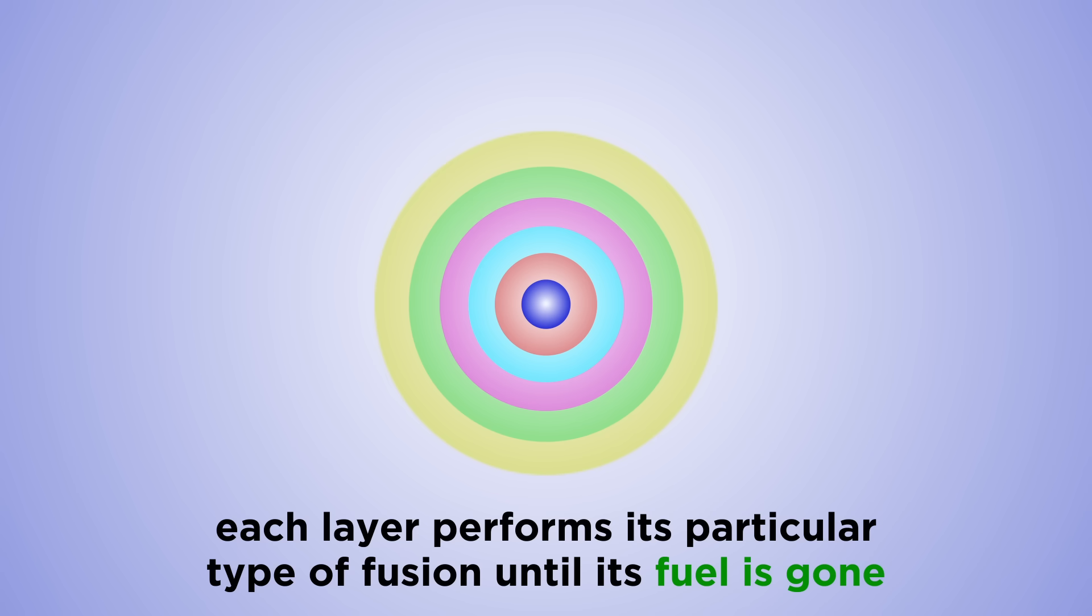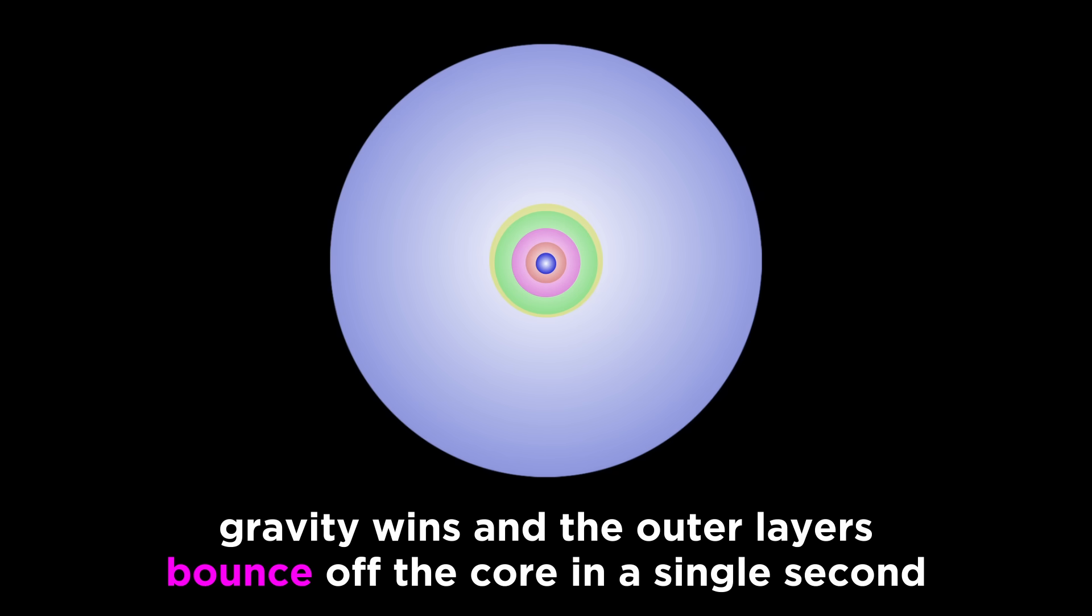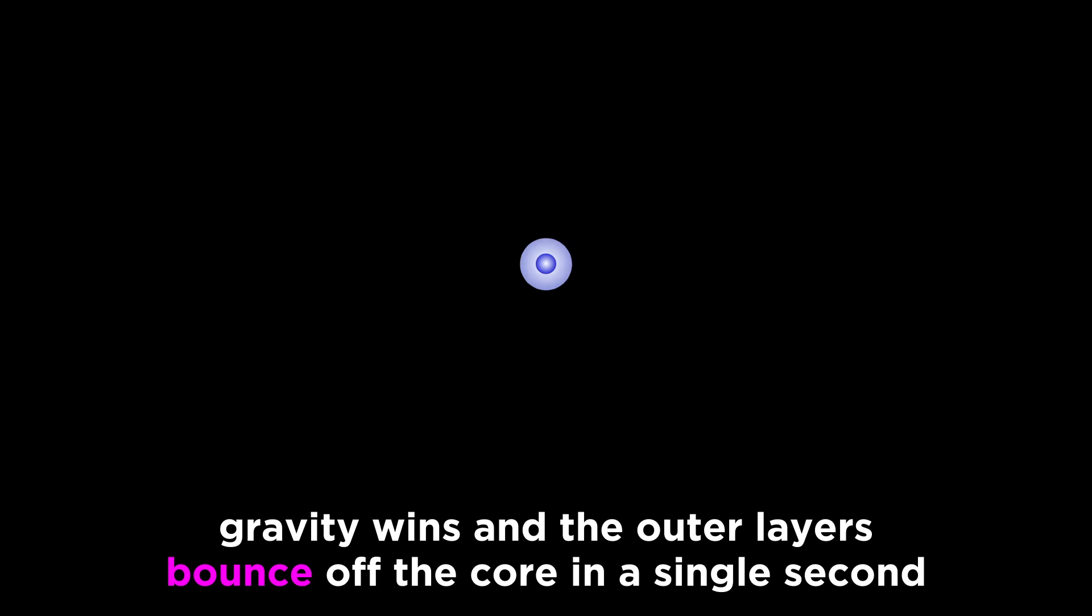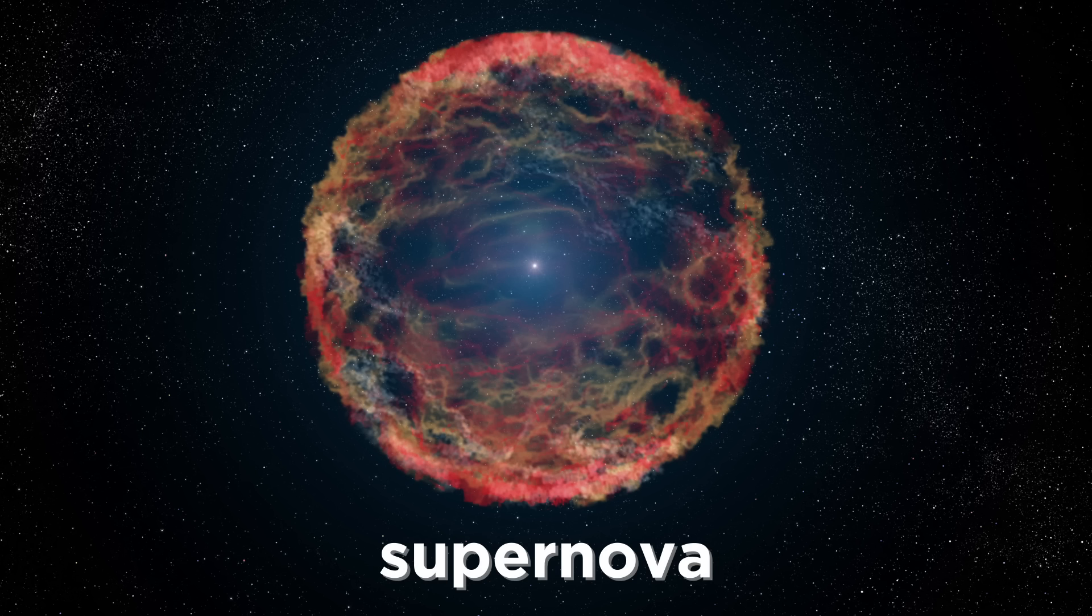As this occurs in these different layers, each performing a particular type of fusion until no fuel remains, the star is left with a core of iron nuclei that are so stable that further fusion can release no more energy. At this point, gravity wins the fight, and the star collapses within a single second. The outer layers bouncing off the core and triggering an explosion, thus ejecting all of the heavy nuclei the star has created out into space. This awesome event, one of the most violent and energetic phenomena in the universe, is called a supernova.